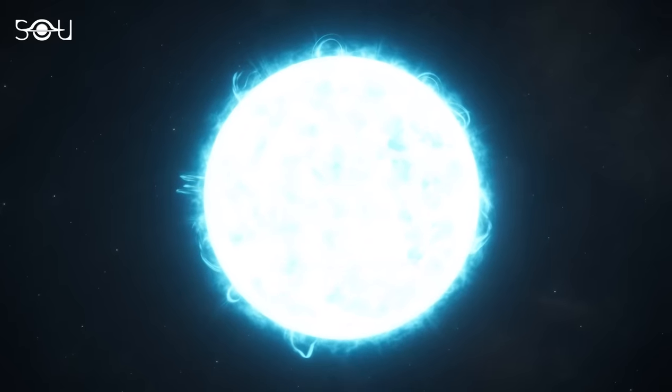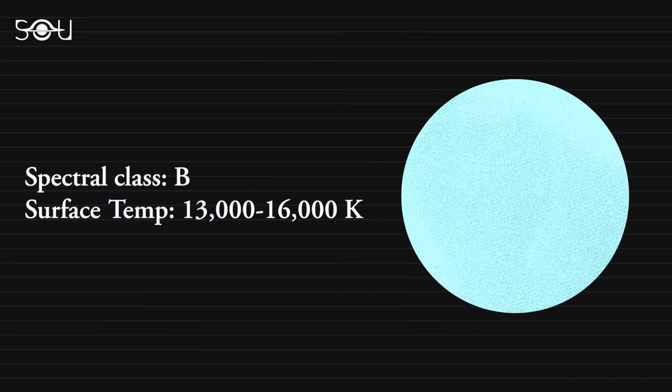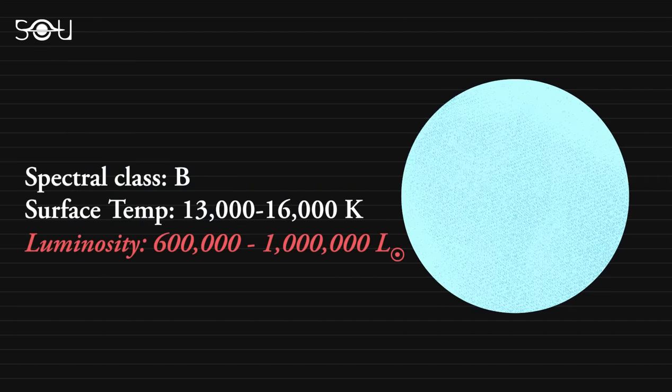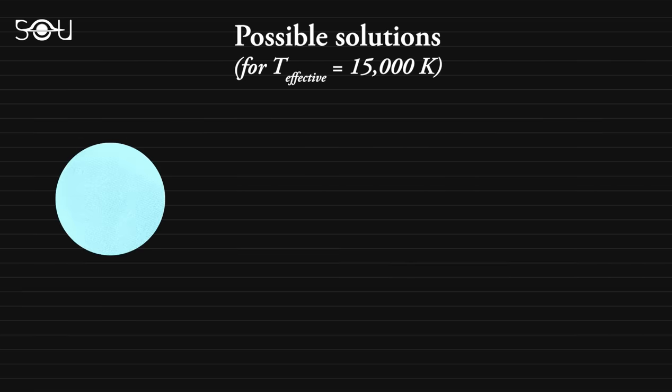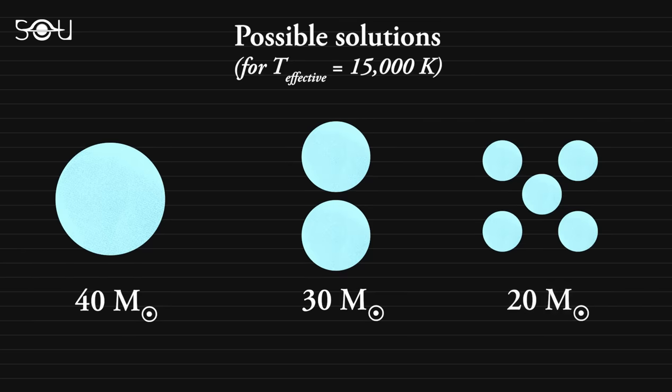The problem lies when we calculate the total luminosity of Earendel. It turns out to be somewhere between 600,000 and 1 million times brighter than our Sun. This means that if Earendel is a single star that has evolved, it must be about 40 times heavier than the Sun. But there's another way this much light could be produced. It could come from two stars, each about 30 times heavier than the Sun, or from five stars, each around 20 times heavier if they had a surface temperature of about 15,000 Kelvin.